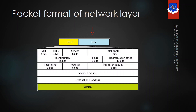Inside the header there are many fields, and the length of each row is 32 bits. There are a total of 6 rows, so 32 times 6 means 192 bits is the maximum length possible for the header.